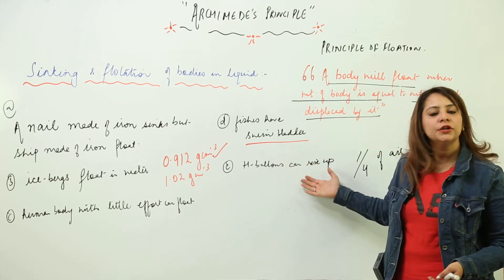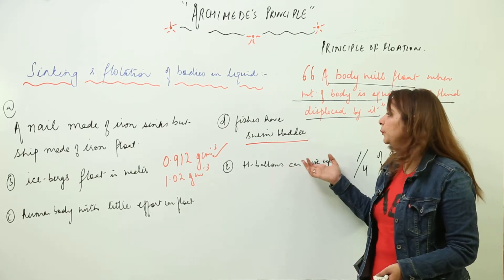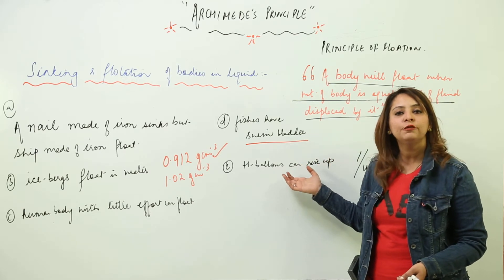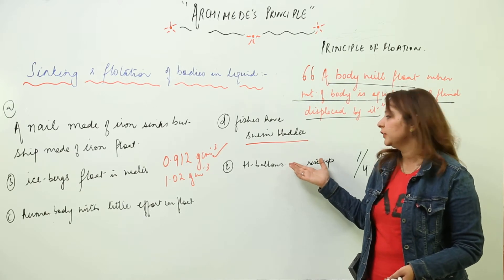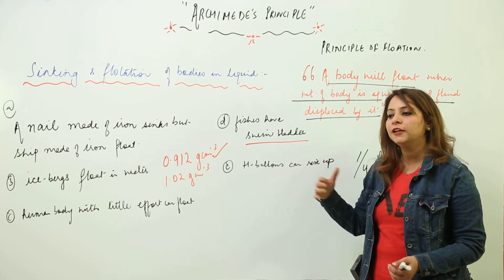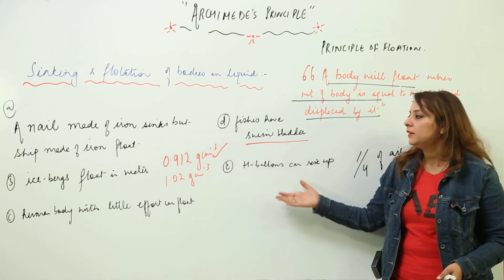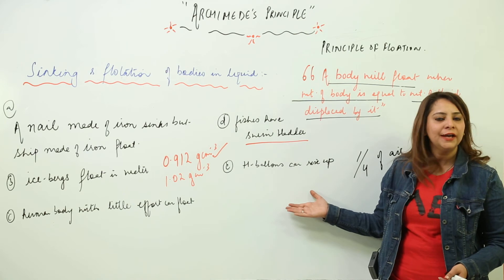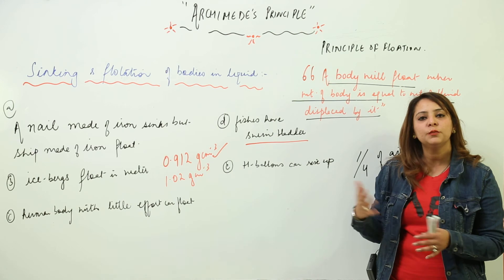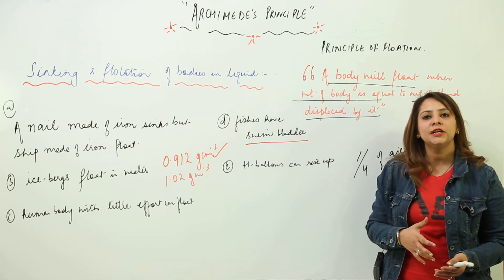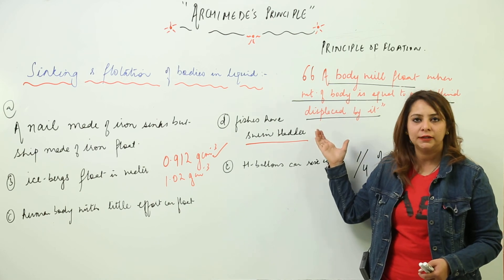This is all based on the principle of flotation. The condition which is prevailing behind floating is that the density of fluid should be equal to the density of the substance, or the weight of the body should be equal to the weight of the fluid displaced by it. These are only five examples I have summed up. If you try to locate other phenomena where the body is sinking or floating, you can make out that the principle of flotation is correct and is being obeyed at all places.